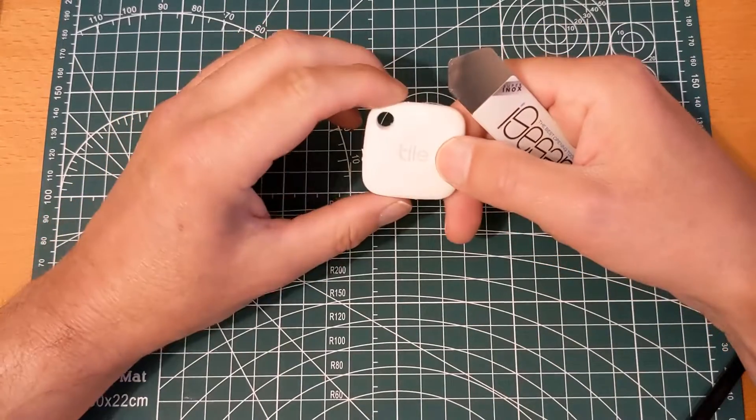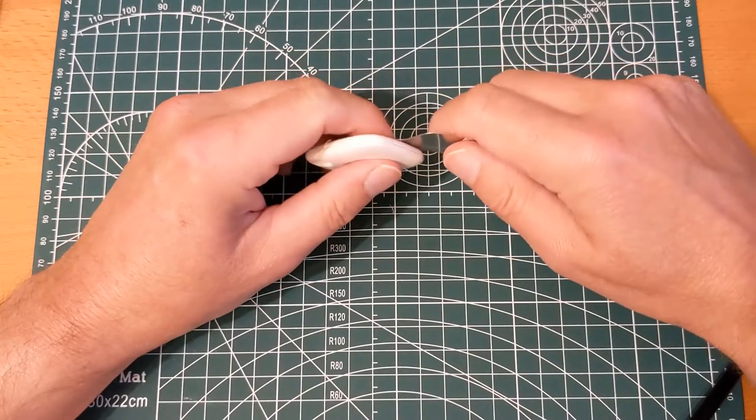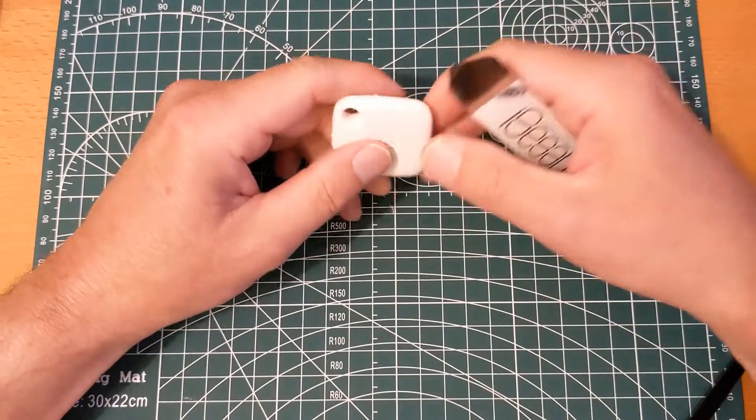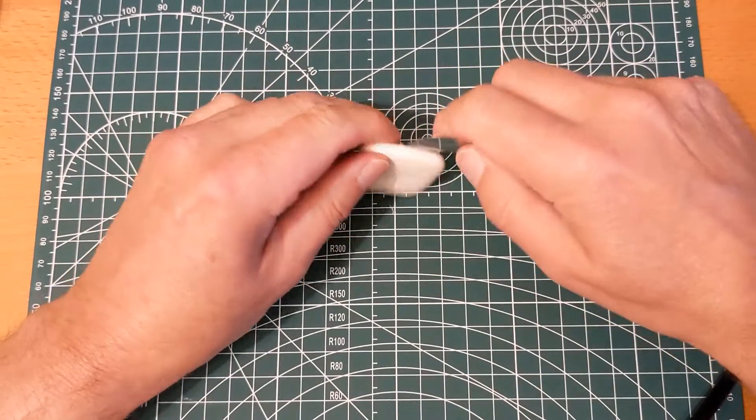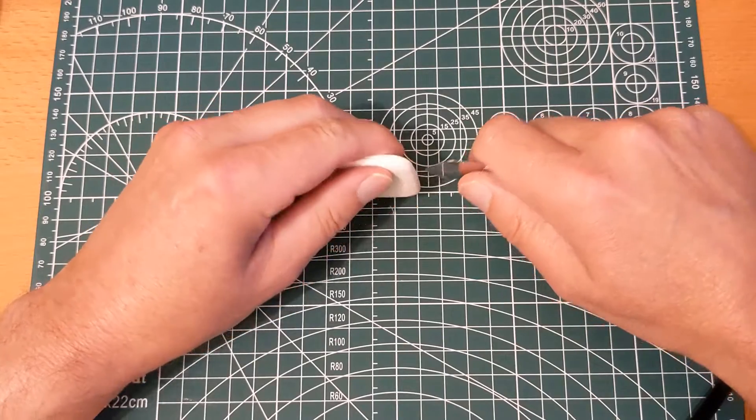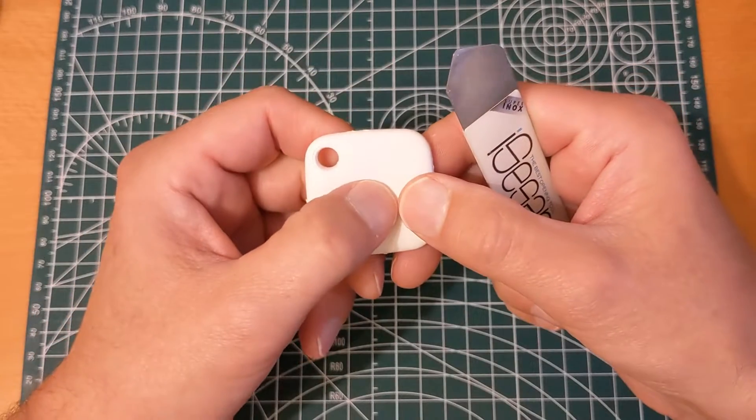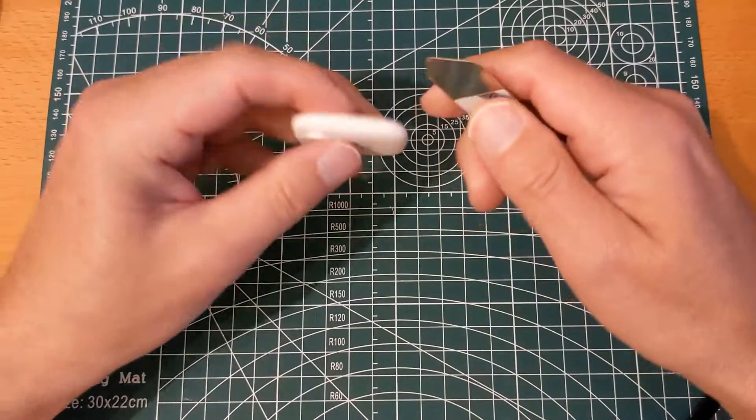Basically, if this is attached to your keys or in your bag, you set it up and give it a name in the app. If you can't find your keys or your bag, you tap on it in the app and it will make a sound on this, and you can locate it audibly. Likewise, if you press on this, it would make your phone bleep so you can find your phone.